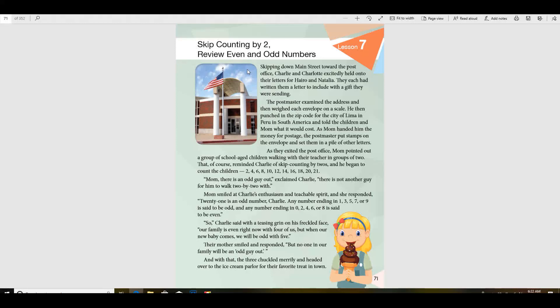As they exited the post office, mom pointed out a group of school-aged children walking with their teacher in groups of two. That of course reminded Charlie of skip counting by twos, and he began to count the children: two, four, six, eight, ten, twelve, fourteen, sixteen, eighteen, twenty. Twenty-one mom, there is an odd guy out, exclaimed Charlie. There's not another guy for him to walk with two by two.